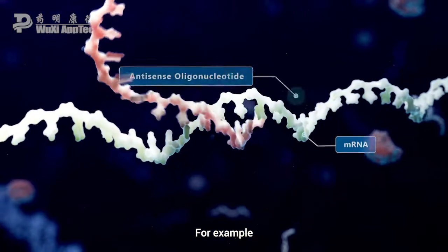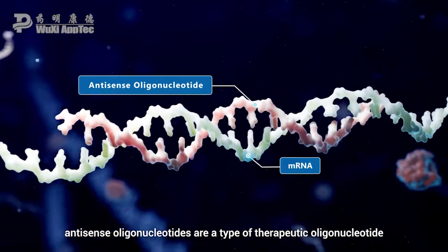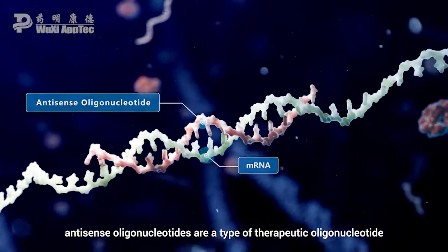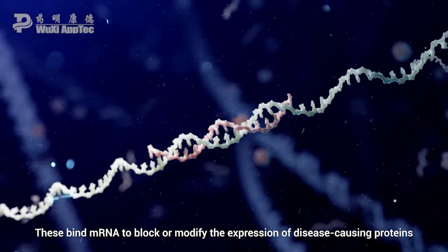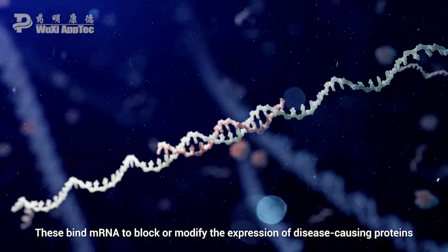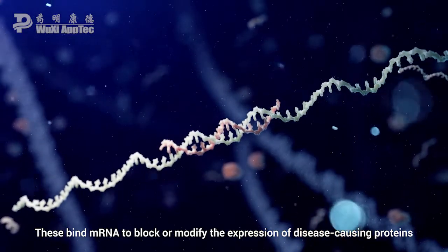For example, antisense oligonucleotides are a type of therapeutic oligonucleotide containing complementary sequences to those of specific mRNAs. These bind mRNA to block or modify the expression of disease-causing proteins.